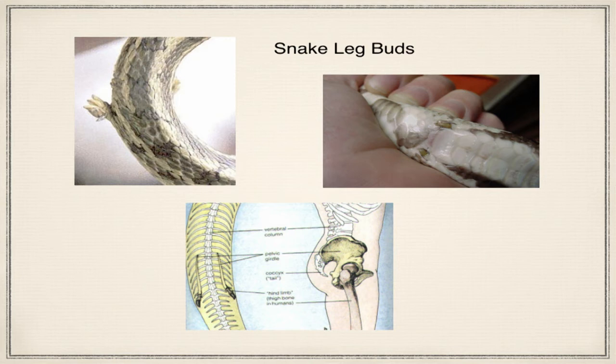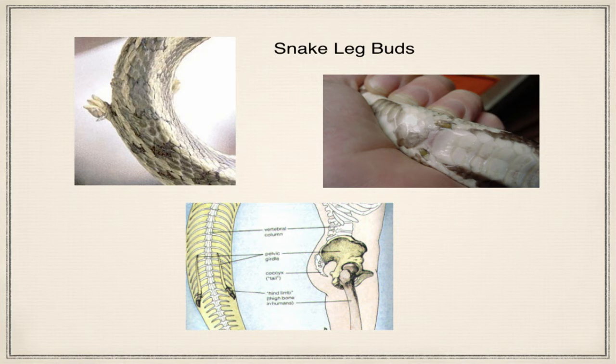Another example: in some snakes, you can see the vestige of their ancestry. Snakes' ancestors came from the water and had four limbs. In some snakes, you can find little snake-limb buds in the back that in their ancestors would have grown into legs. Most of the bones are inside the snake, so it can slither around fine. But why would you create a snake from scratch with leg bones it's never going to use, bones that stay inside the body? It makes no sense from a creationist point of view but makes a lot of sense from an evolutionary one.